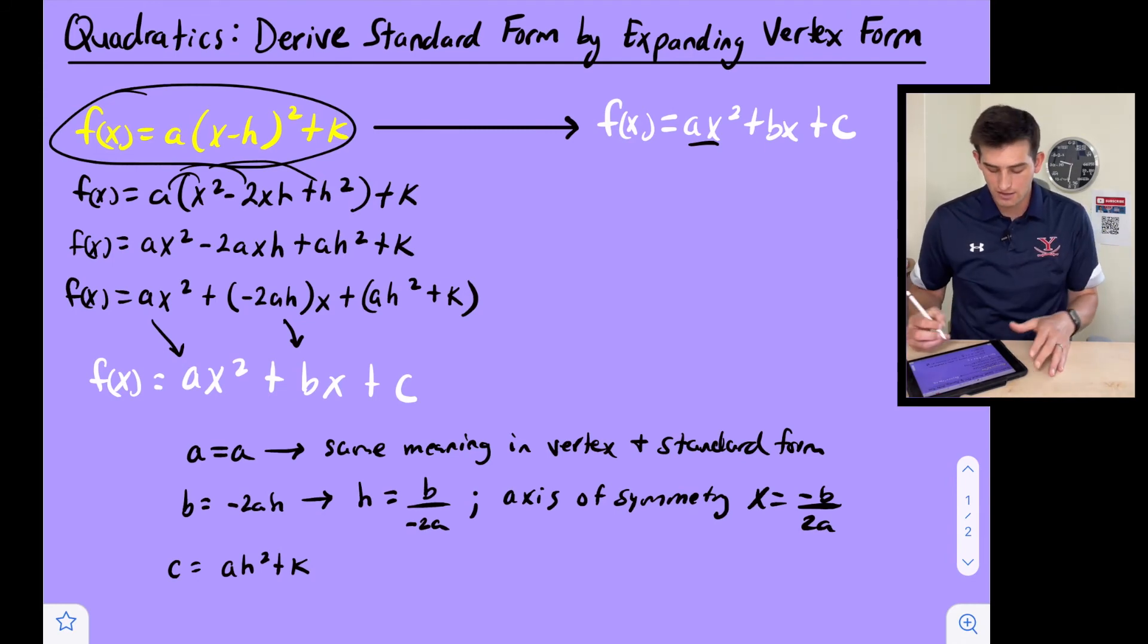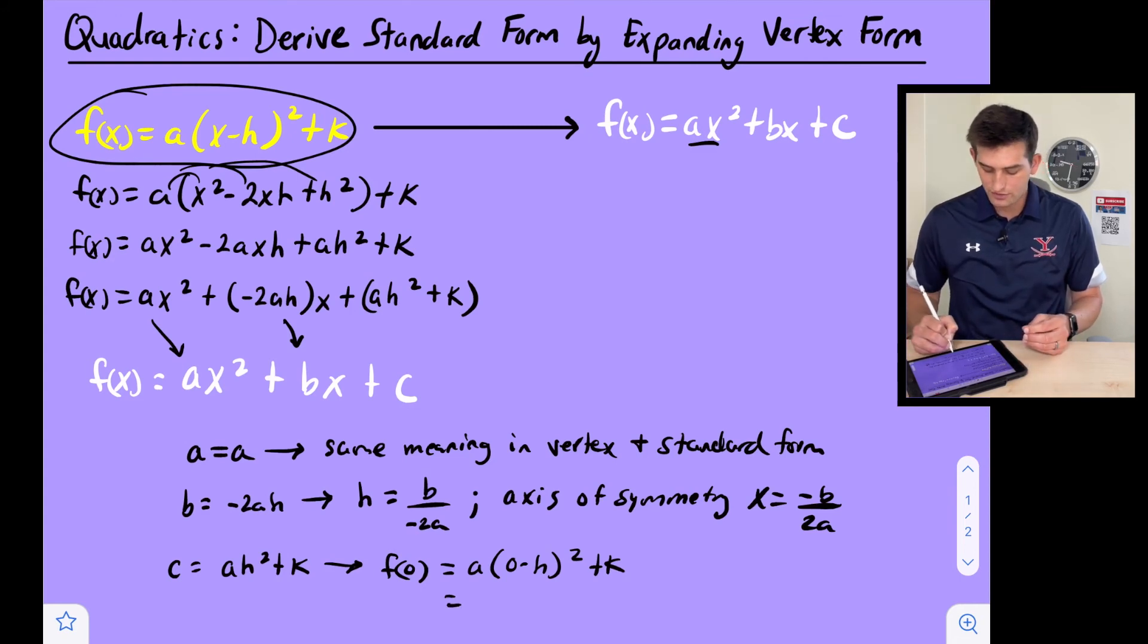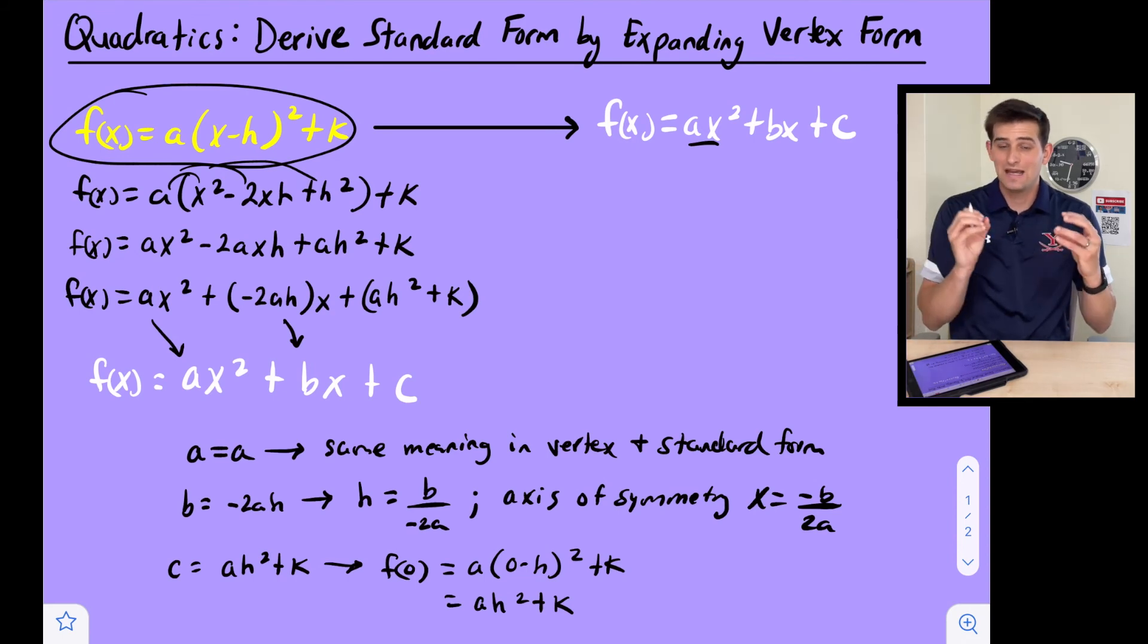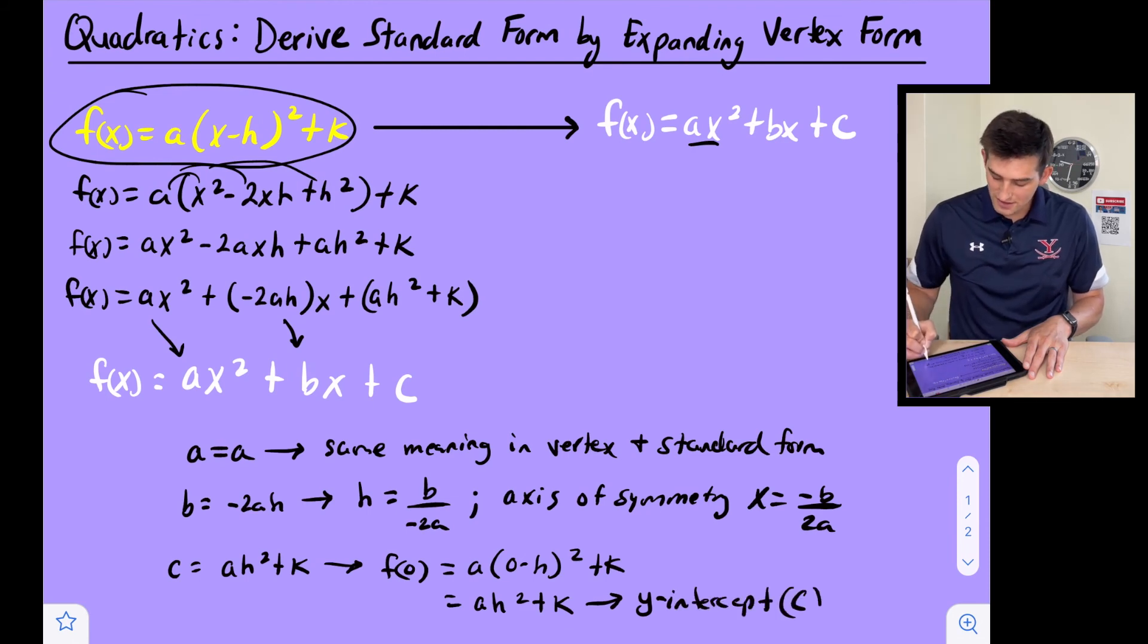If we take vertex form and we plug in zero for x we're going to say f(0) is equal to a times (0 - h)² + k. And now if we solve this a little bit we're going to get f(0) is equal to, well, 0 - h would be -h and -h squared would be positive h², so we get ah² + k. And so now notice what we got: ah² + k is our y value when x is zero, which means ah² + k is the y-intercept, which means c is also our y-intercept in our standard form quadratic.